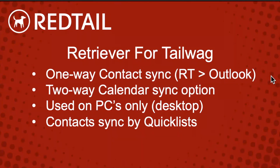When you sync contacts with Retriever for Tailwag, they sync specifically through a quick list. Your contacts need to be part of a quick list, and you select which quick list during setup. Those contacts only go from Redtail to Outlook. To download the program, go to the question mark in the top right-hand corner — the very last item says 'Download Retriever for Tailwag.' You need a PC. Once downloaded, log in with your Redtail username and password, then select which quick list to sync and how you want the calendar to sync.